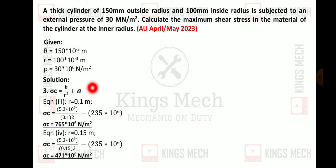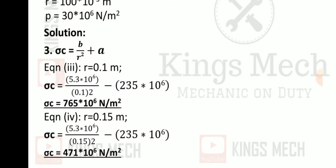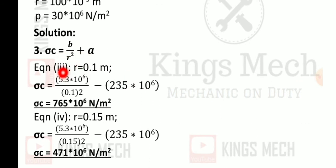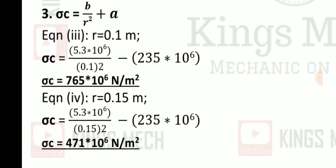Calculate the maximum C stress. Sigma C value B by R square plus A. Third equation R equal to 0.1, fourth equation R equal to 0.15. Substitute the 2 values in the equation. Sigma C value 765×10⁶ N/m², 471×10⁶ N/m². That's why we have 2 values. This is higher most value 765.